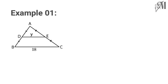Now look at this example. ABC is a triangle. D and E are midpoints of the sides AB and AC respectively. We need to find the value of y. By the midpoint theorem we can state DE is parallel to BC.